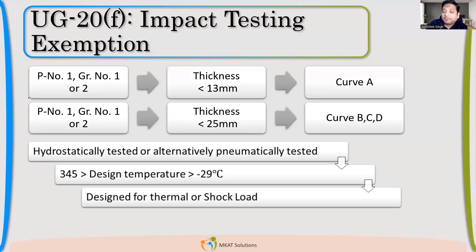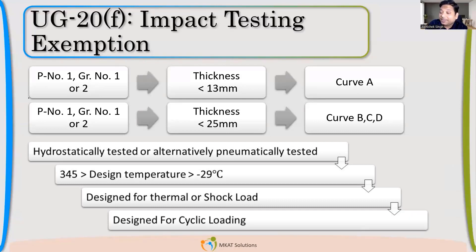Third, there should not be any thermal or shock load present as a design loading. And please remember, all of these conditions are to be met — not only one. There should also not be any cyclic loading present. If cyclic loading and thermal or shock loads are not defined as design loading, and your design temperature is between minus 29 to 345, and there is a hydrostatic test — then for P number one material, I can take this exemption.